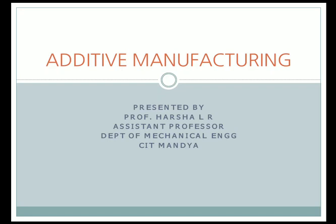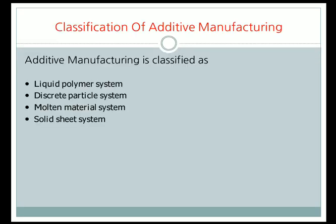Good afternoon students. Today we shall discuss the different classifications of additive manufacturing. Additive manufacturing is classified as: liquid polymer system, discrete particle system, molten particle system, and solid sheet system.